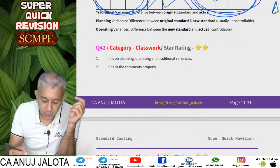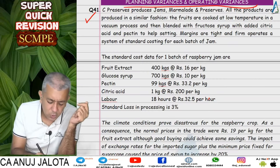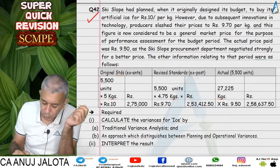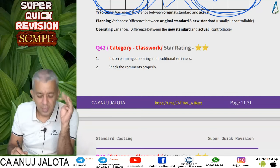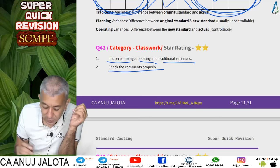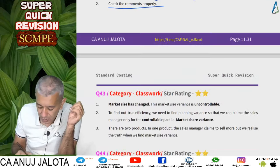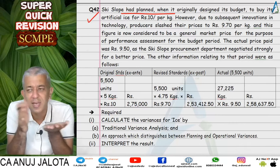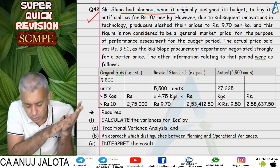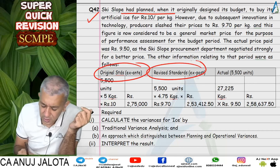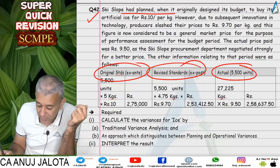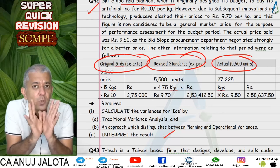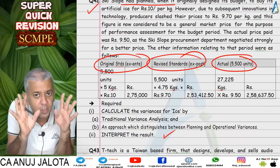Question 41 was a simple question. Question 42 was exactly similar — on planning, operating, and traditional variances. It features a company that purchases ice and has a skiing-type business. They give you the original standards, new standards, and actuals, and ask for comments. Please check the comments of this question carefully, as they may be useful in other questions too.